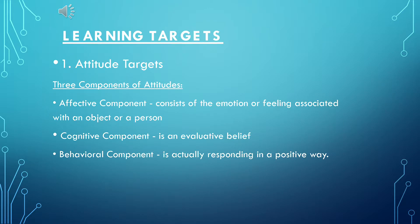Learning targets. Number one is attitude targets. MacMillan 1980 defines attitudes as an internal state that influences what students are likely to do. It cannot be seen because it is an internal state that influences us. The internal state can to some degree determine a positive or negative, favorable or unfavorable reaction toward an object, situation, person, or group of objects, general environment, or group of persons.